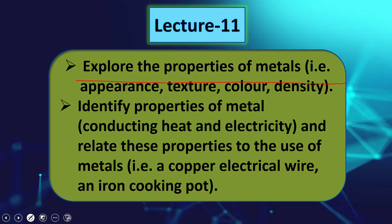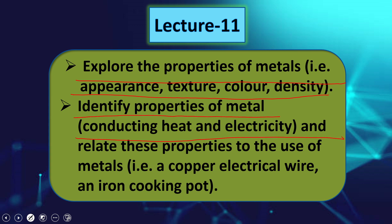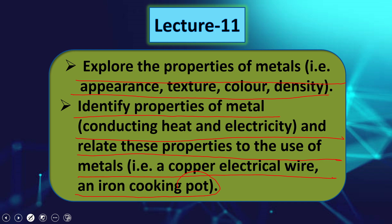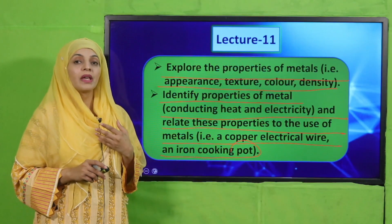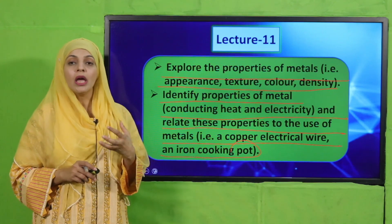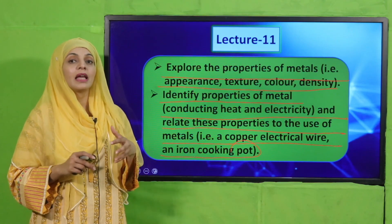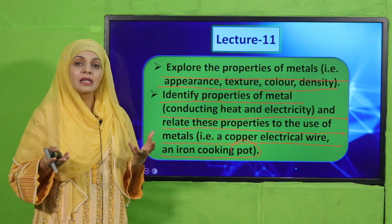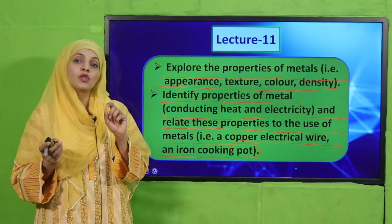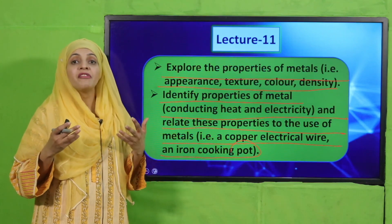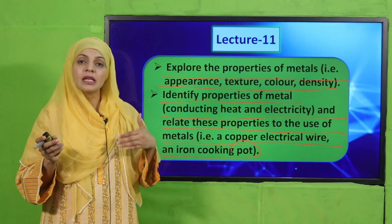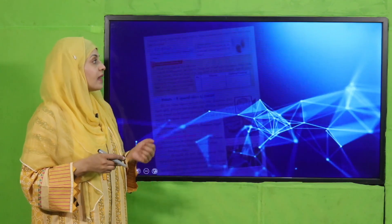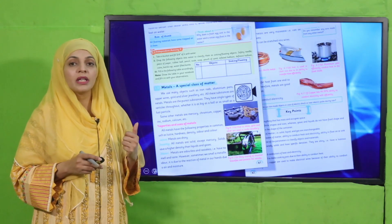In lecture number eleven, students will be able to explore the properties of metals — appearance, texture, color, and density — and identify and relate these properties to the uses of metals, such as copper for electrical wire and iron for cooking pots. We will discuss metal properties in detail, including whether they conduct electricity or heat. For example, copper is a good conductor of electricity, so it is used to make copper wires. Iron is a good conductor of heat, so it is used to make cooking pots. We will use such examples to explain metal properties.